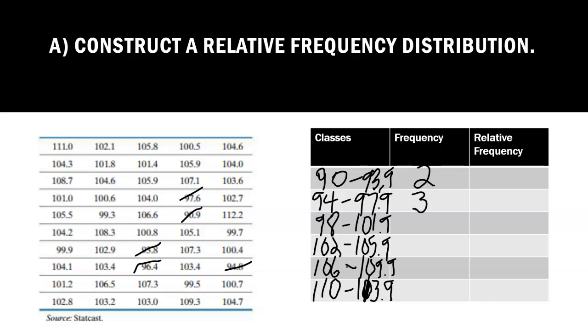Now I want to count the numbers between 98 and 101.9. So I see one here, one here, that's two, one there, three, four, five, six, seven, eight, nine, ten, eleven, twelve. I see twelve in this class.